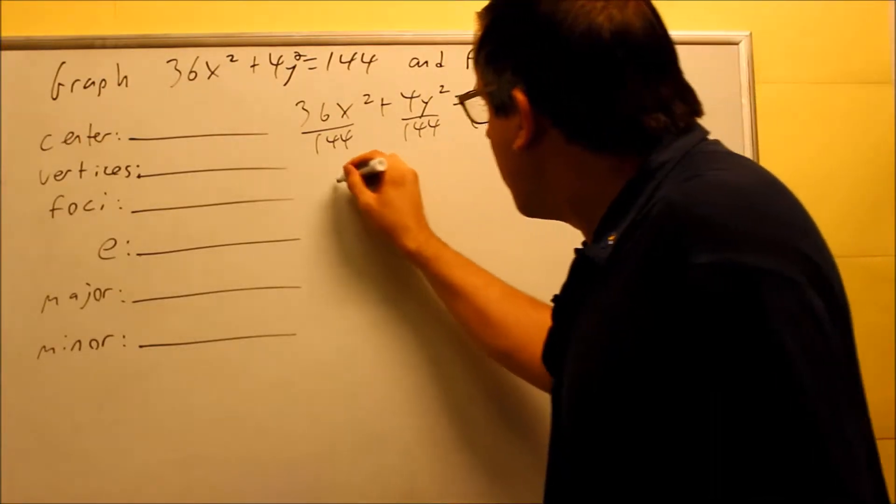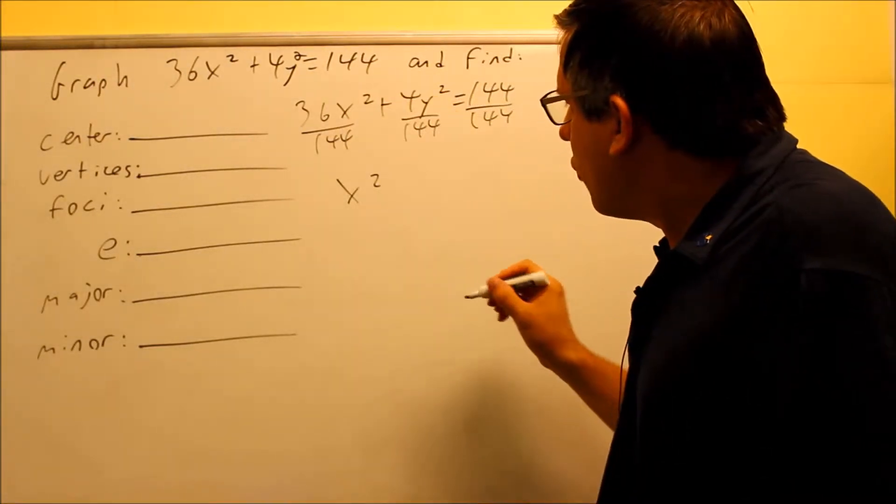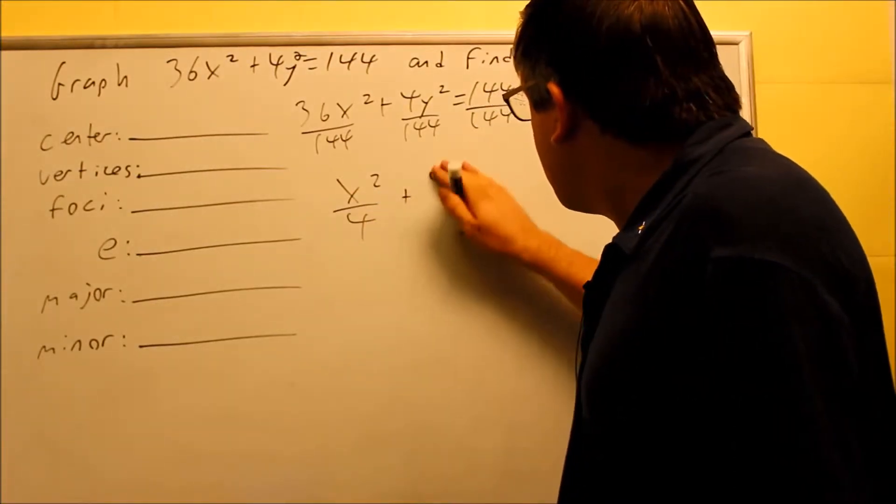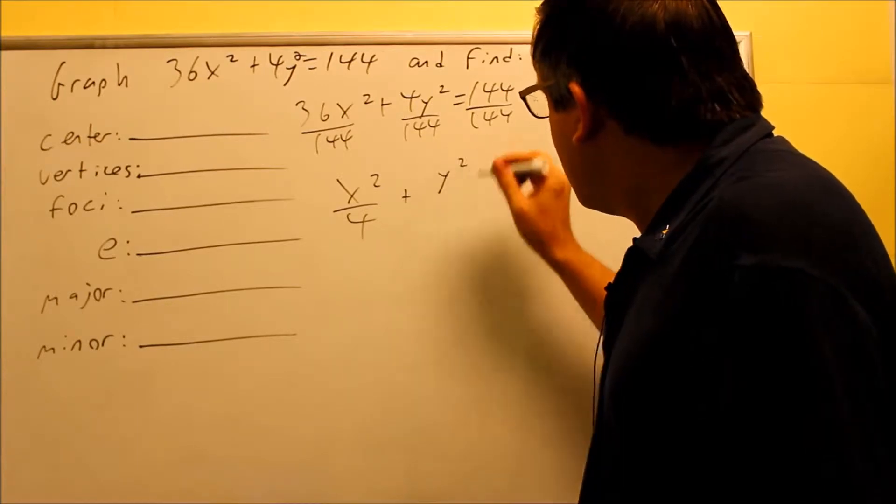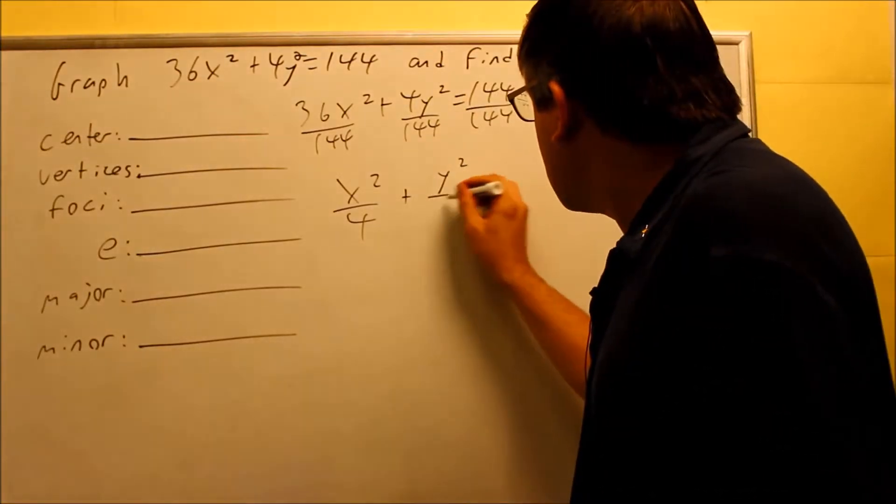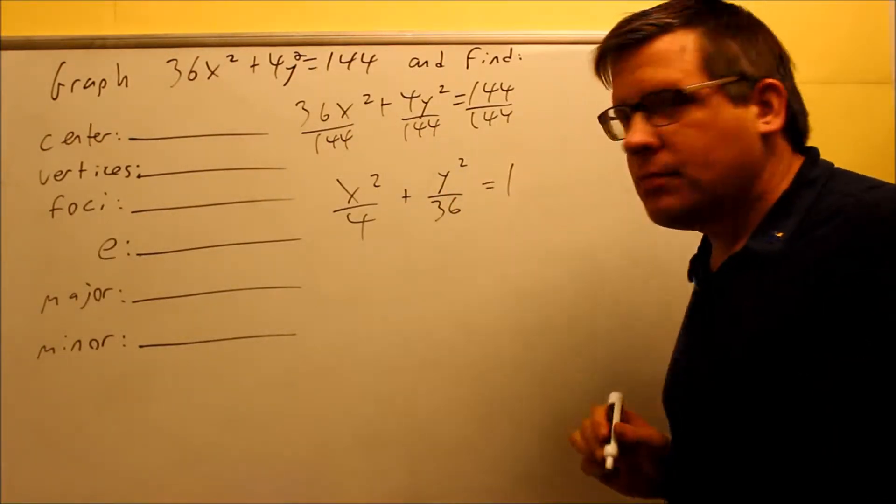So when we do that, we want to reduce each of the fractions that we have here. So 36 over 144, that's 1 fourth. So let's write that as a 4 in the bottom. This one here, when we divide that, 4 divided by 144, you're going to get 1/36. So we're going to get a 36 in the bottom here. And then we get a 1 on the end.